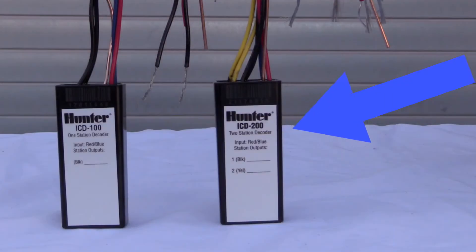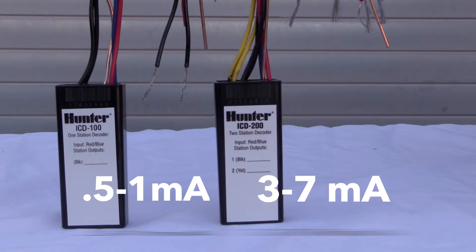Note that the mA draw for multi-station and special device decoders will be higher. Generally, decoders for single valve operation will draw 0.5 to 1 mA. Multi-station, pump, or sensor decoders will draw 3 to 7 mA. The as-built drawing can help you identify if these are used in your system.